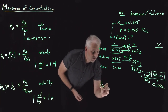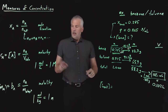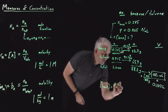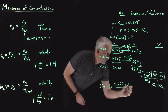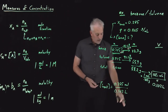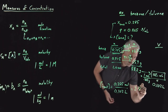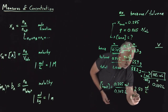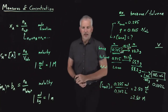Now we can calculate the molarity of benzene: moles of benzene divided by total volume in liters is 0.285 moles divided by 0.102 liters, which gives 2.80 moles per liter, or a 2.80 molar solution of benzene.